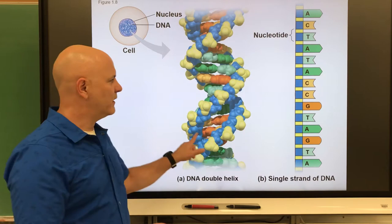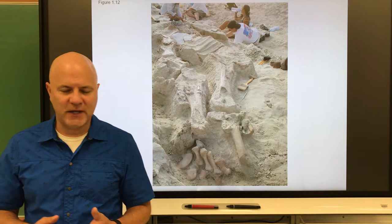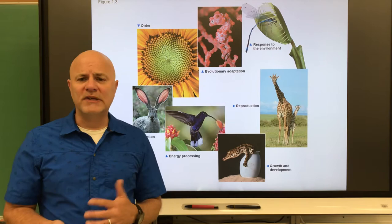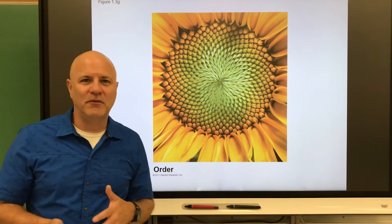Lastly is evolutionary theory, which states that species change over time and that living species have arisen from earlier life forms. We'll spend a lot of time on evolution later this semester. Now let's get to our last topic in chapter one: the properties of life. There are seven properties of life. The first is that life is organized — all life exhibits complex organization.